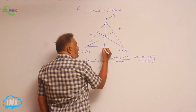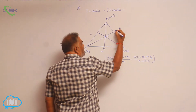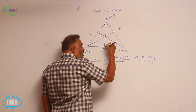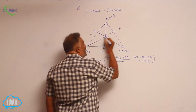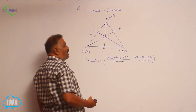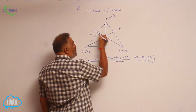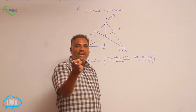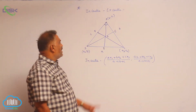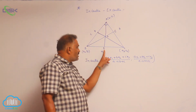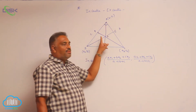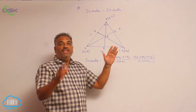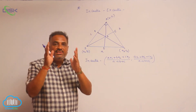Give the names D, E, F to the feet of the bisectors. AD is called the internal angular bisector from A, BE is one more internal angular bisector from B, and CF is the third internal angular bisector from C. We have a standard result: every angular bisector divides the opposite side in the ratio of its adjacent sides.